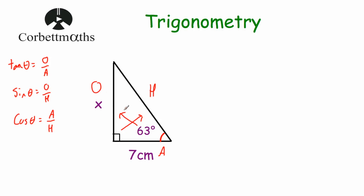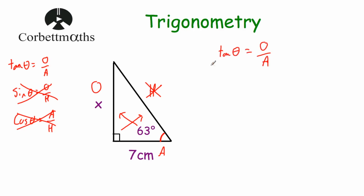In this question we're considering the adjacent, because that's 7 centimetres, and we want to find the opposite. So we're dealing with the opposite and the adjacent — we're not using the hypotenuse, so let's cross that off. We then cross off any trig ratio that has the hypotenuse in it, so we're not using sine and not using cos. We're going to be using tan in this question. Tan beta is equal to the opposite divided by the adjacent.